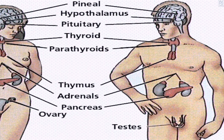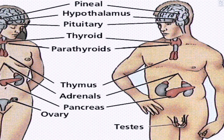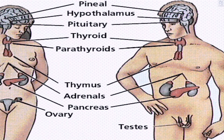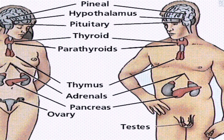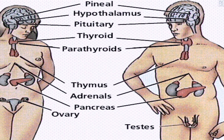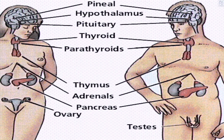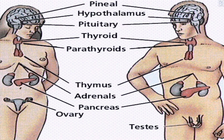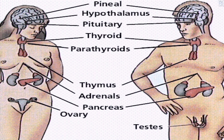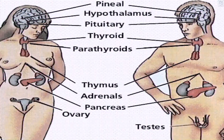The endocrine system is the system of glands, each of which secretes a type of hormone directly into the bloodstream to regulate the body. The endocrine system is in contrast to the exocrine system, which secretes its chemicals using ducts.